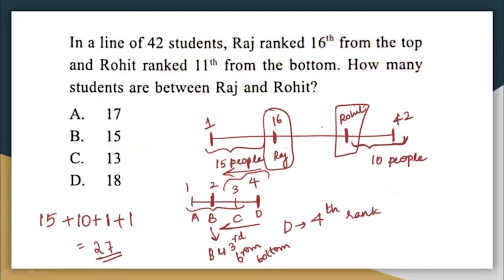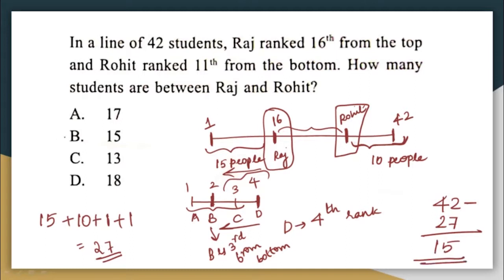The question is: how many people are there between Raj and Rohit? Totally, 42 students are standing in the line, out of which we have already counted 27. So how many people are there between Raj and Rohit? 42 minus 27, which is equal to 15. So there are 15 people between Raj and Rohit.